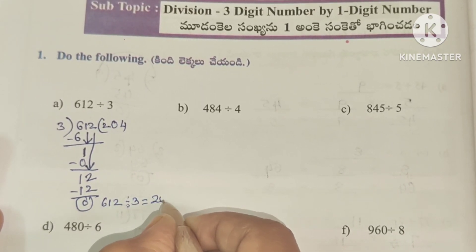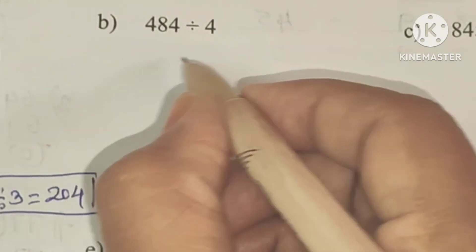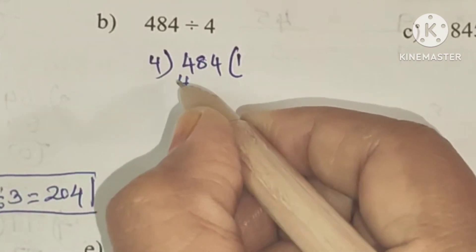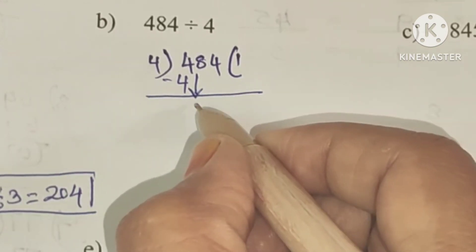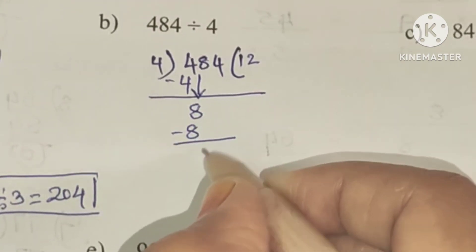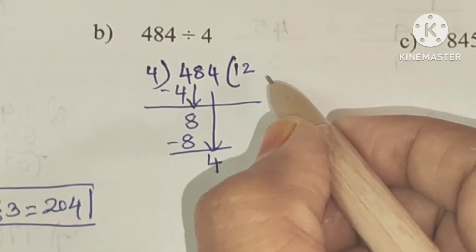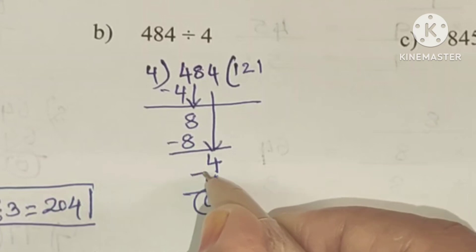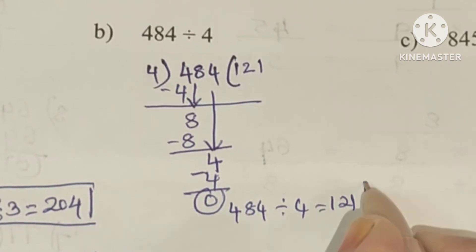B: 484 divided by 4. Dividing: 4 ones are 4, after subtracting remainder 0, next number 8 — 4 twos are 8, after subtracting remainder 0, next number 4 — 4 ones are 4, after subtracting remainder 0. So 484 divided by 4 equals 121.